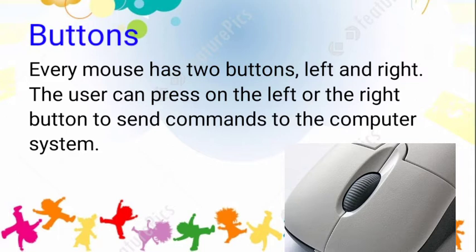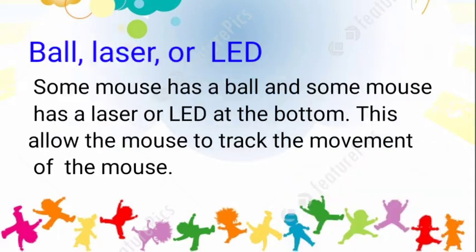The second part is ball, laser and LED. Some mice have a ball and some have a laser and LED at the bottom. This allows the mouse to track the movement of the mouse.